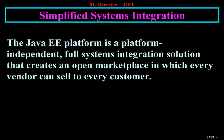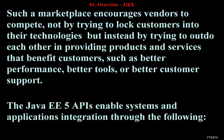The Java EE platform is a platform-independent, full systems integration solution that creates an open marketplace in which every vendor can sell to every customer. Such a marketplace encourages vendors to compete, not by trying to lock customers into their technologies, but instead by trying to outdo each other in providing products and services that benefit customers, such as better performance, better tools, or better customer support.